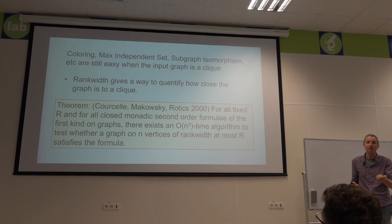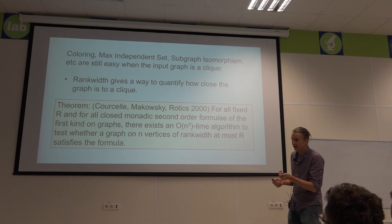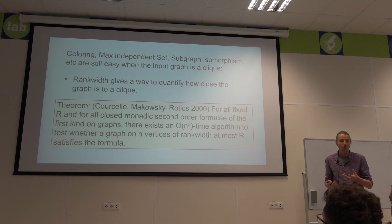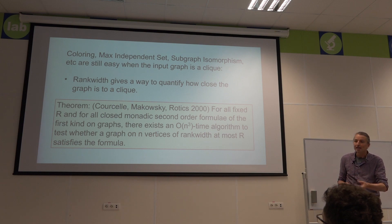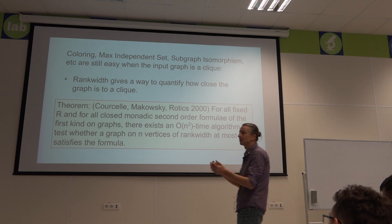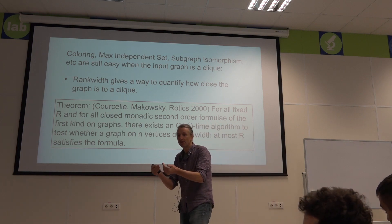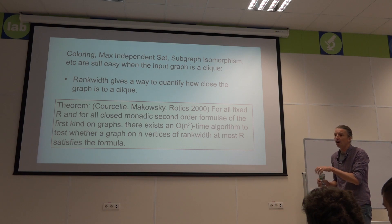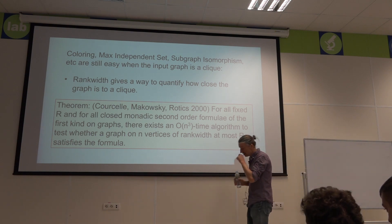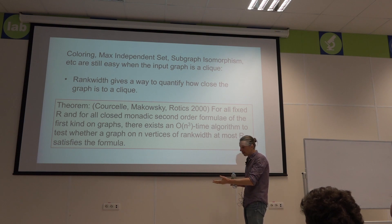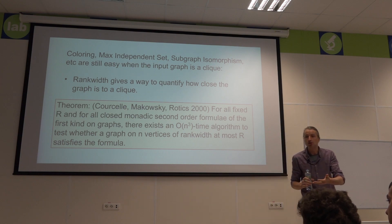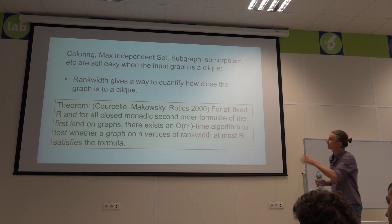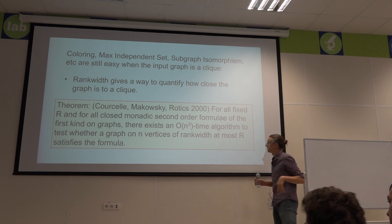Rank width and tree width differ specifically on cliques — and this points to the algorithmic motivation for rank width, because many problems like maximum independent set, maximum weighted independent set, and subgraph isomorphism are easy to solve on cliques. Rank width gives an alternate measure that still allows efficient resolution of these problems when rank width is bounded. There's an analog of Courcelle's theorem: any graph property in a certain logical class has a cubic time algorithm on graphs of bounded rank width.